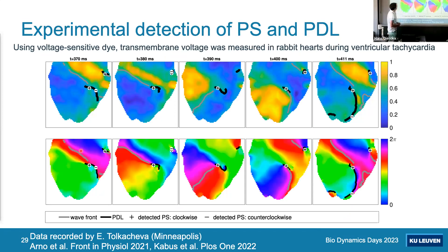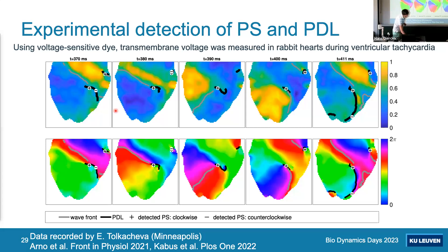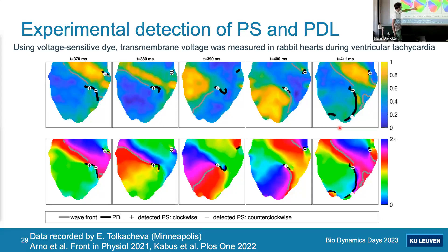These phase defect lines were also detected experimentally in rabbit heart data from collaborator Elina Tolkacheva. Voltage maps show conduction block lines in black: a wavefront circles around them and eventually hits another region to form another conduction block. Phase singularities appear to jump back and forth along the line with very short lifetimes, while the persistent pattern at all times is the mathematical branch cut — the phase defect line.